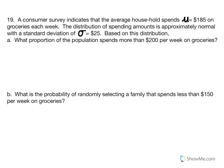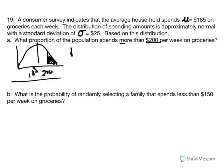Problem 19: A consumer survey indicates the average household spends $185 on groceries each week, with a normally distributed standard deviation of $25. What proportion of the population spends more than $200 per week? With the mean at $185 and $200 to the right, we shade right. Converting to a Z score: Z equals (200 minus 185) divided by 25, giving Z equal to 0.60.